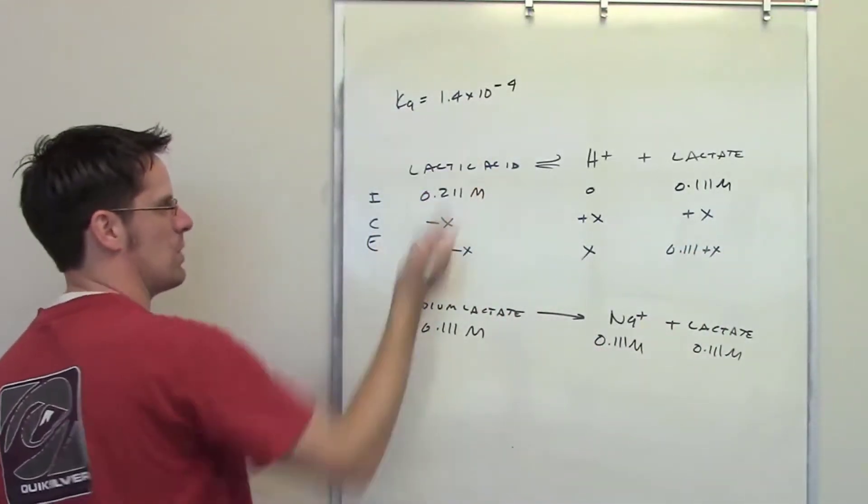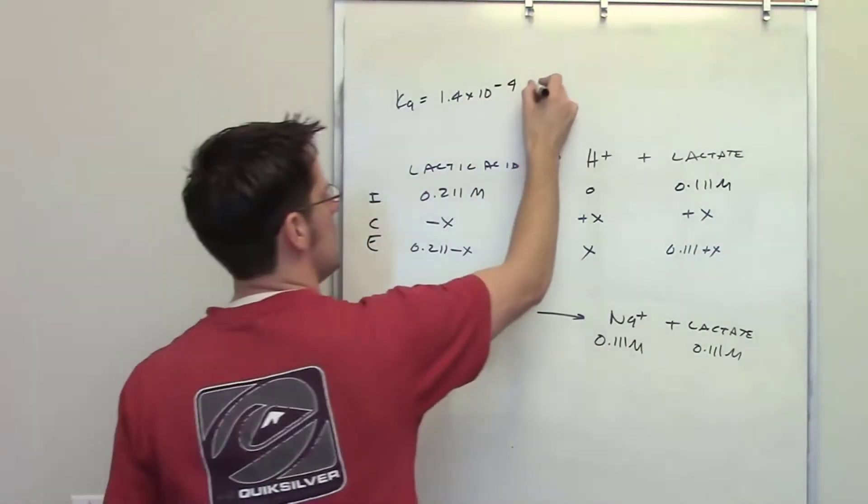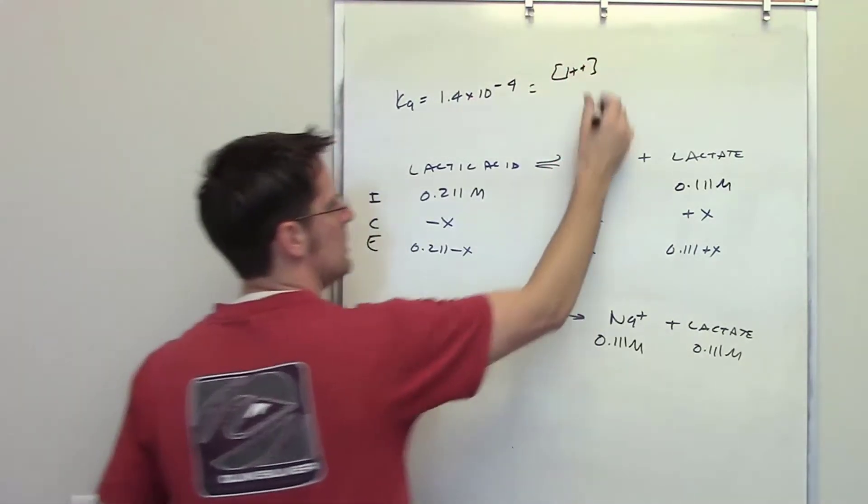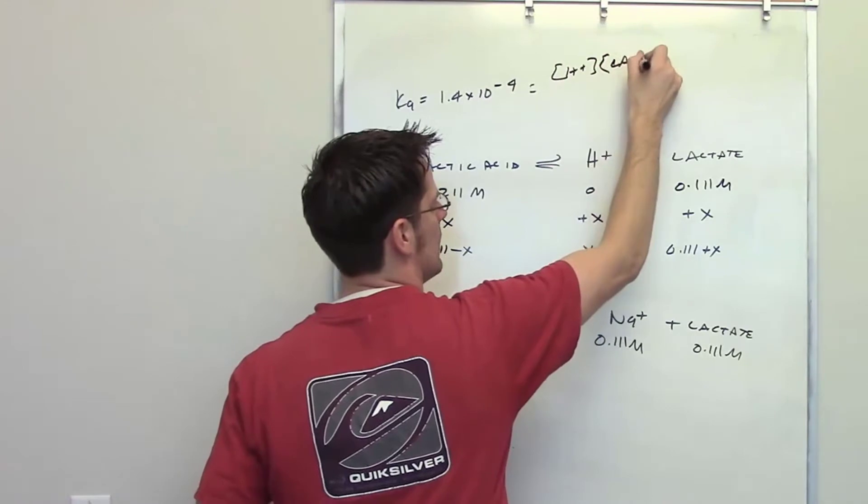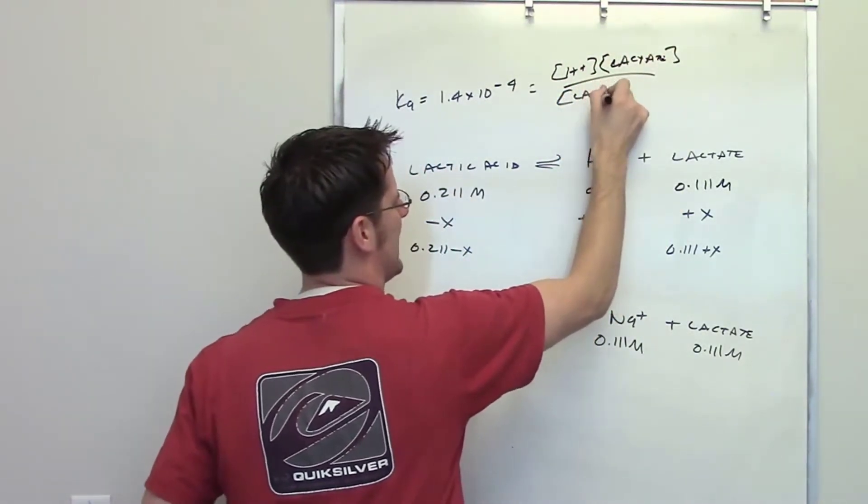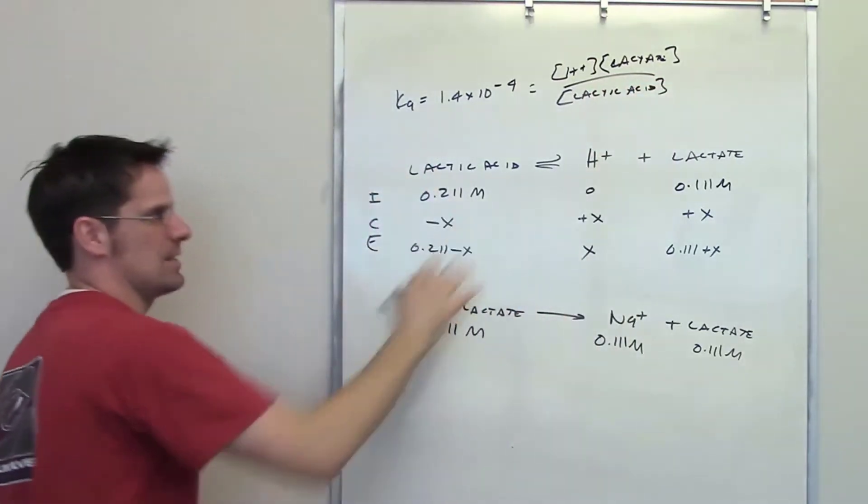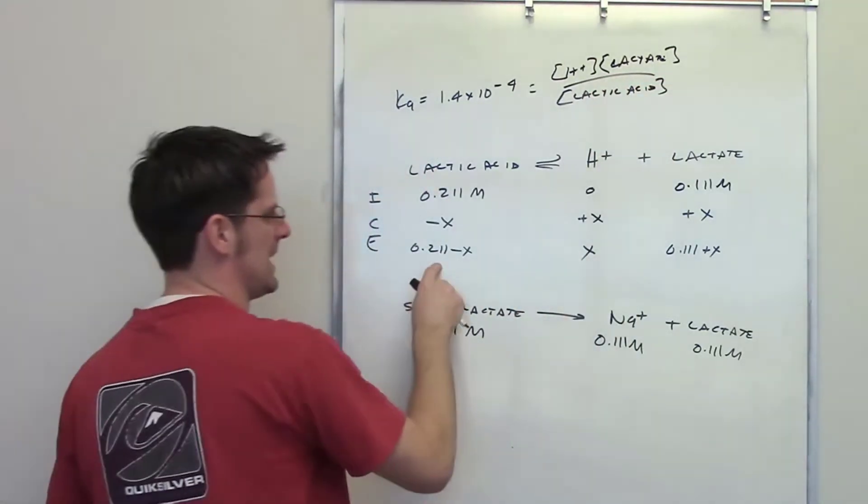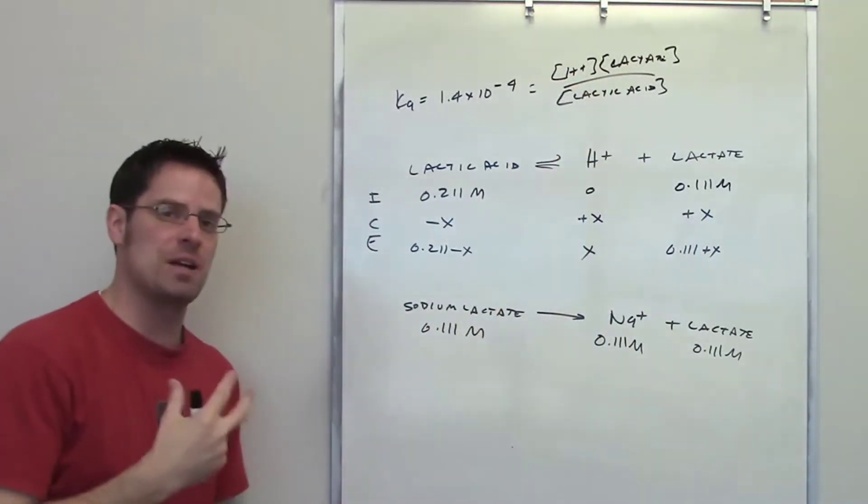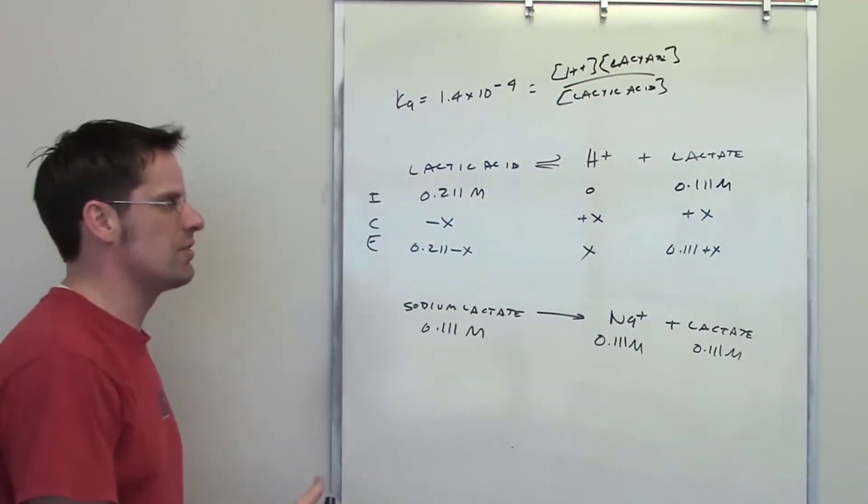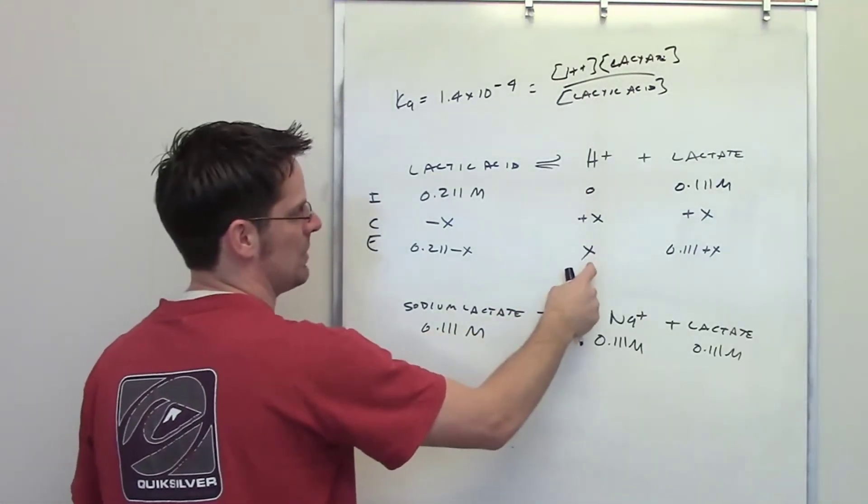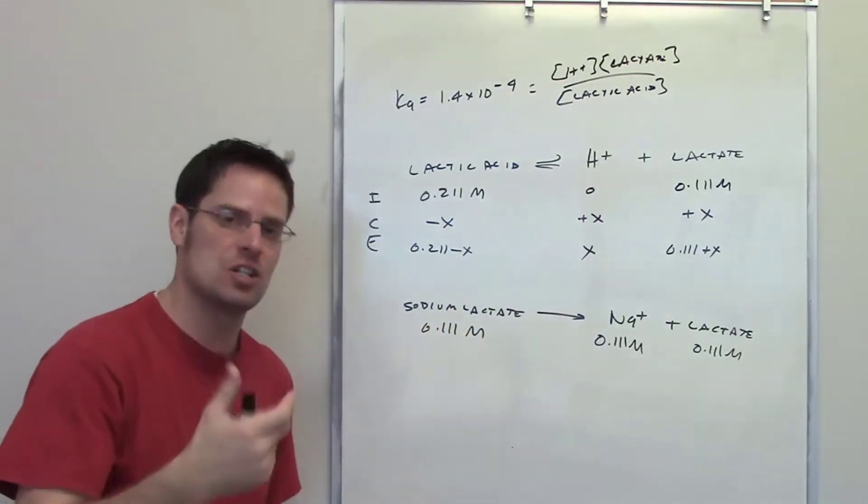We've been told that our Ka is 1.4 times 10 to the negative fourth. The Ka expression is going to be the concentration of H+, multiplied by the concentration of lactate, divided by the concentration of lactic acid for this lactic acid system. All I have to do is take each of these values and plug them in to their respective locations up here in this expression, and then solve for X. When I have X, that will be the equilibrium concentration of H+, and I can determine my pH from there.